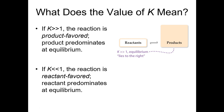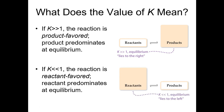Conversely, if K is much less than one, we say that is a reactant favored reaction. The denominator is much larger than the numerator, the denominator represents the reactants, and therefore we say the equilibrium lies to the left — that is a reactant favored reaction.